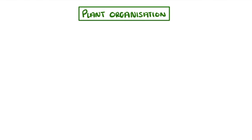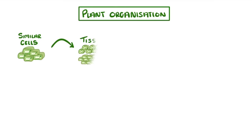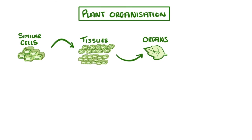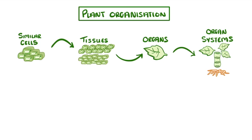Just like in animals, plants have different levels of organisation, with lots of similar cells combining to form tissues, different types of tissues combining to form organs, and then multiple organs combining to form organ systems.